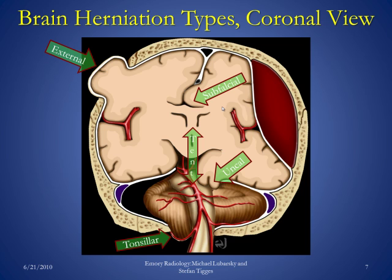Finally, external herniation is herniation of the brain outside of the cranium. That occurs whenever the normal skull is disrupted and the patient underwent a craniectomy, meaning removal of part of the skull. Thereby, the path of least resistance becomes through that opening.